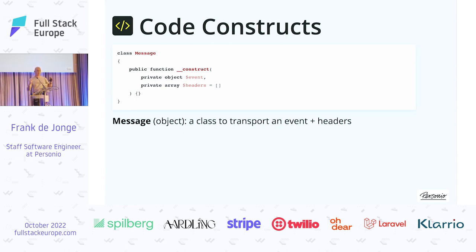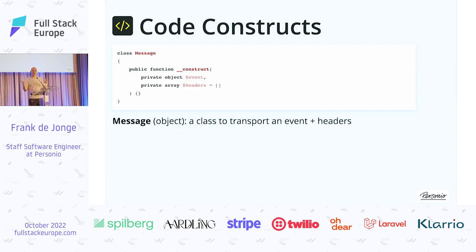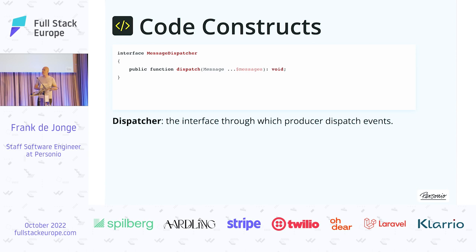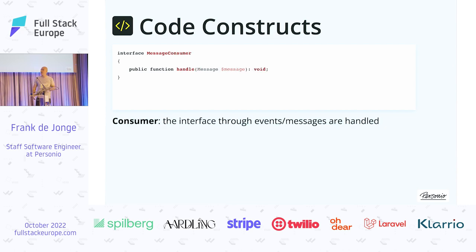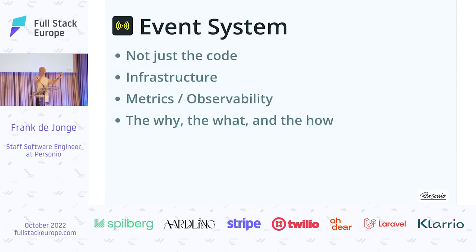I'm going to touch on some code constructs that might not be standard. One of these is a message envelope — something that you wrap around the event when you want to dispatch it. The purpose is to have a body and header constellation, much like an HTTP request allows you to specify headers to store useful information. We also have a message dispatcher, which is just the interface for dispatching messages — from the outside, the only thing that you know about. On the other end, we're going to receive messages, and we have an interface for that as well, then handle them individually. That's the event system — basically all of that.